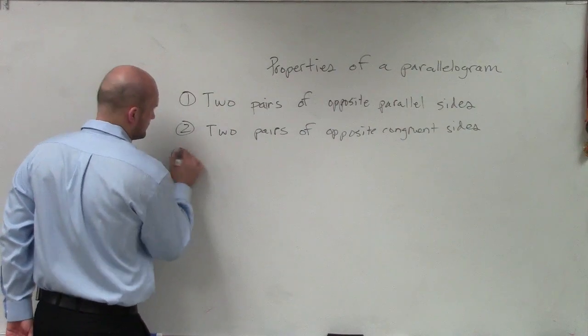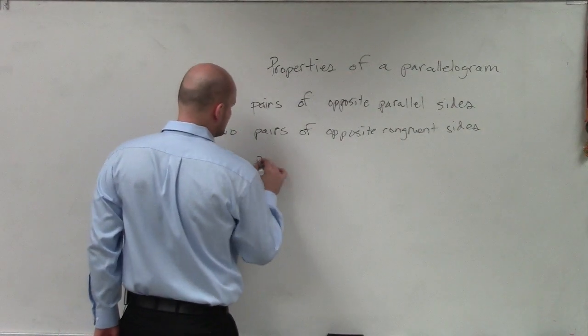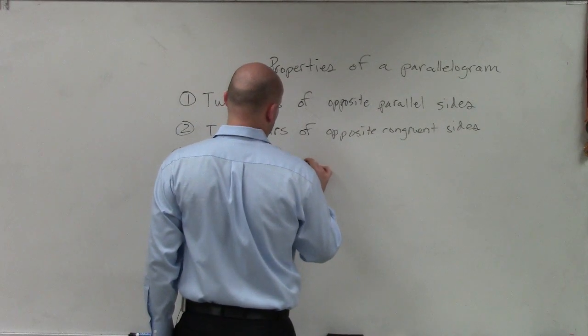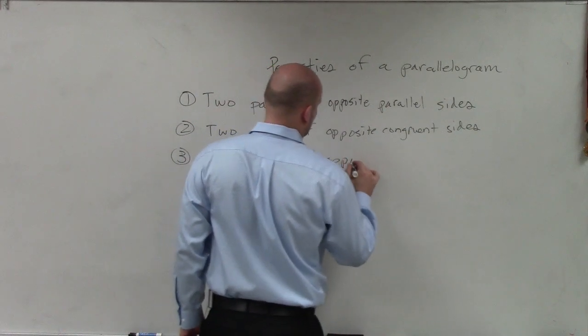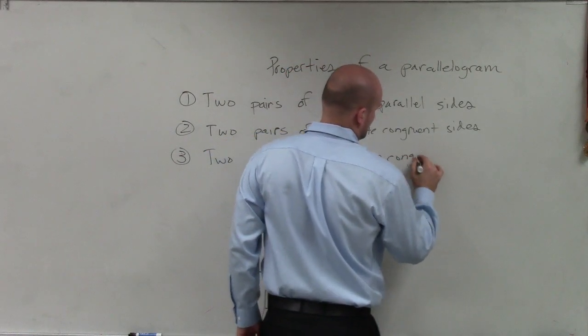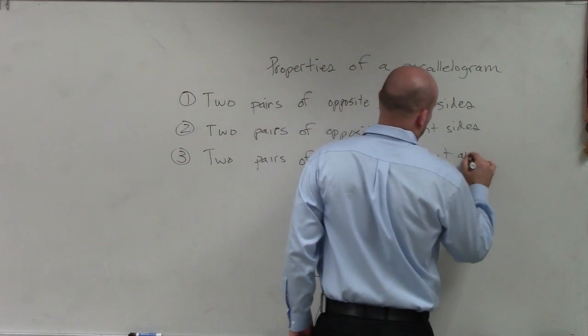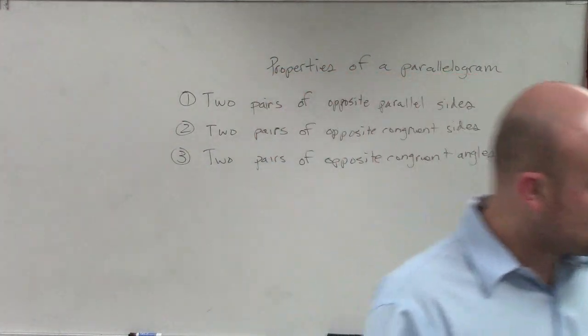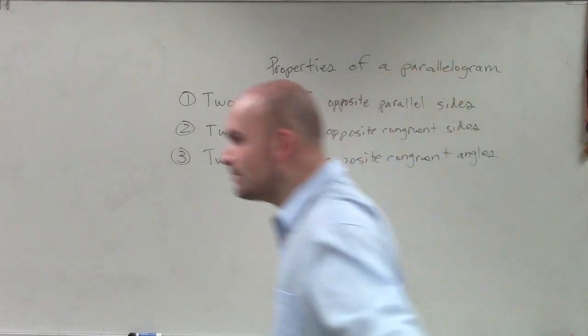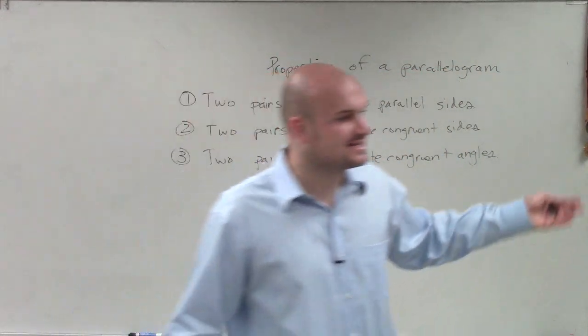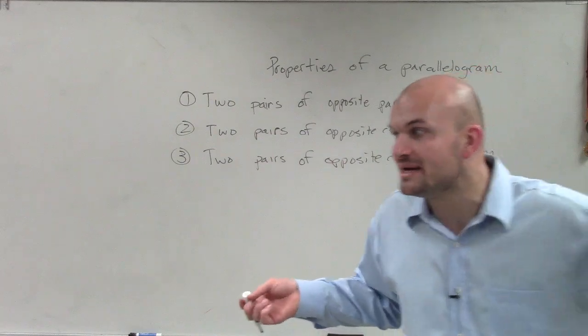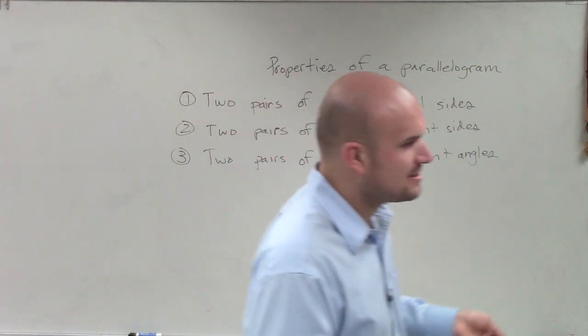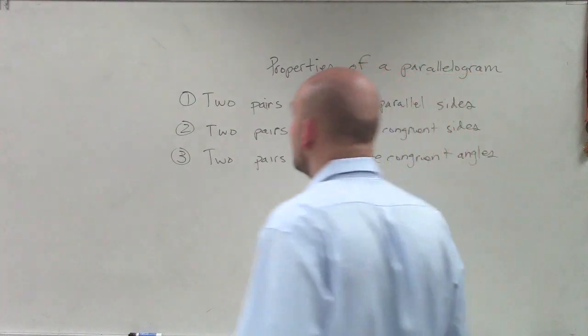If you have two pairs of opposite congruent angles, all right? Now, I know you guys have seen on your homework on 1 through 4, if it shows you that opposite angles are equal in measurement, then you can see that it is going to be a parallelogram.